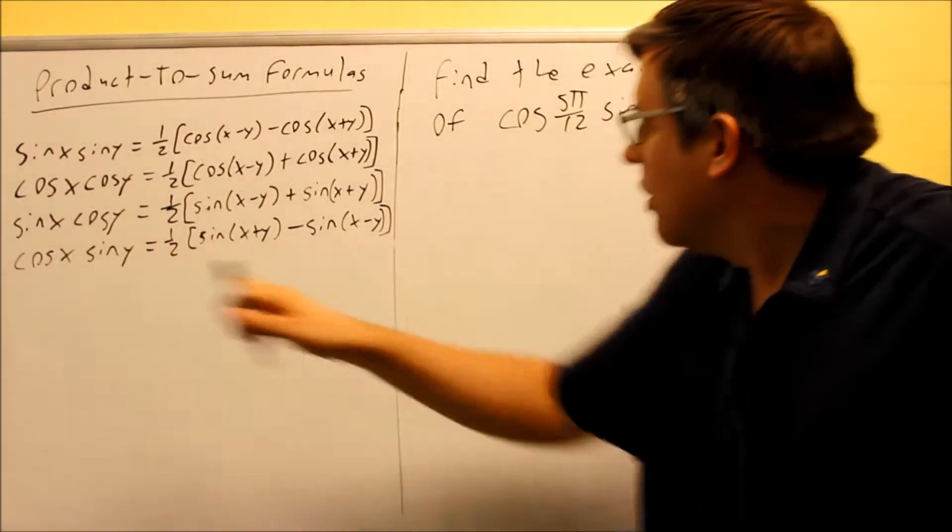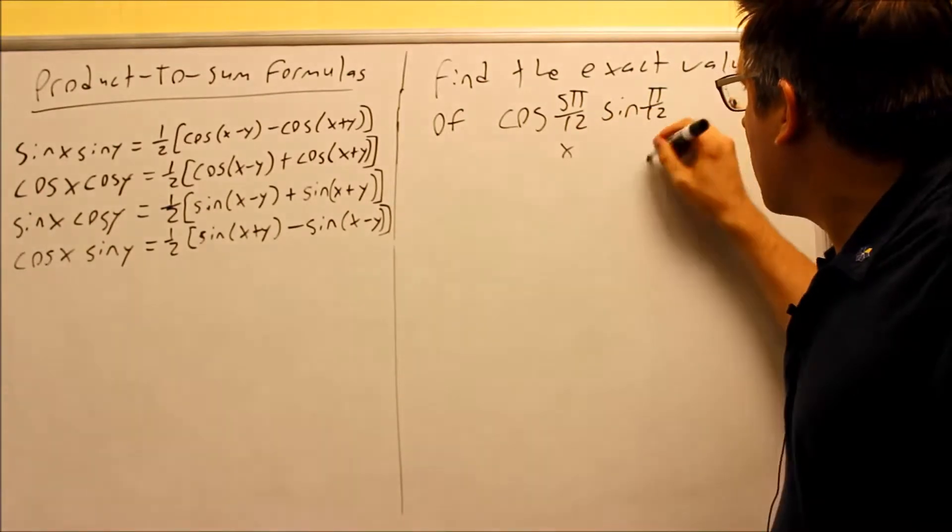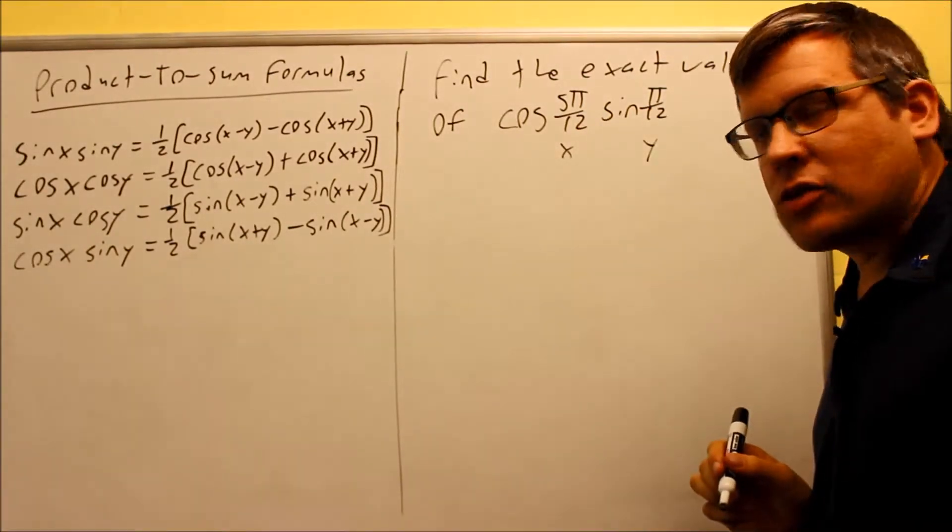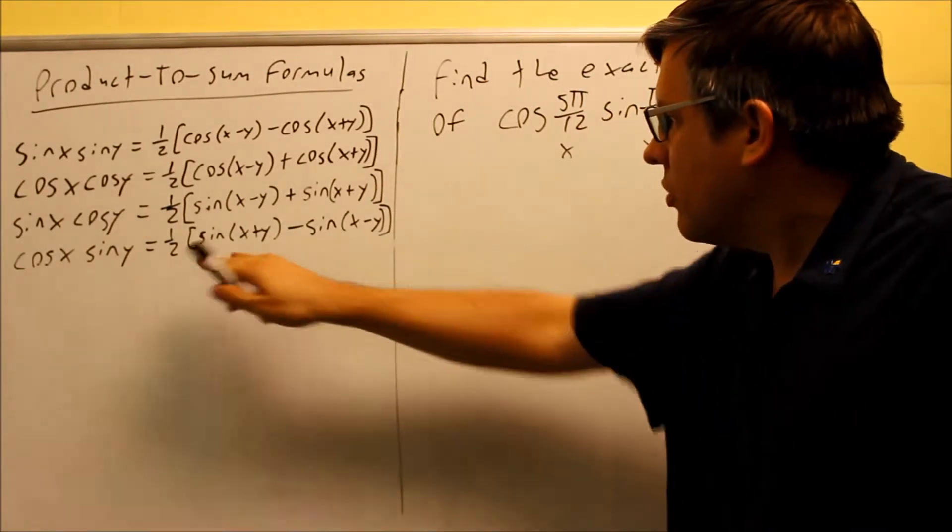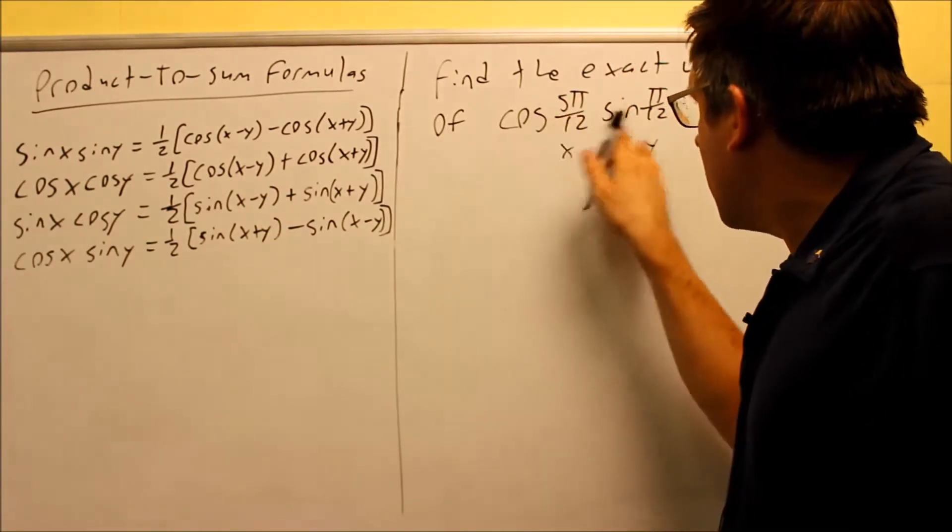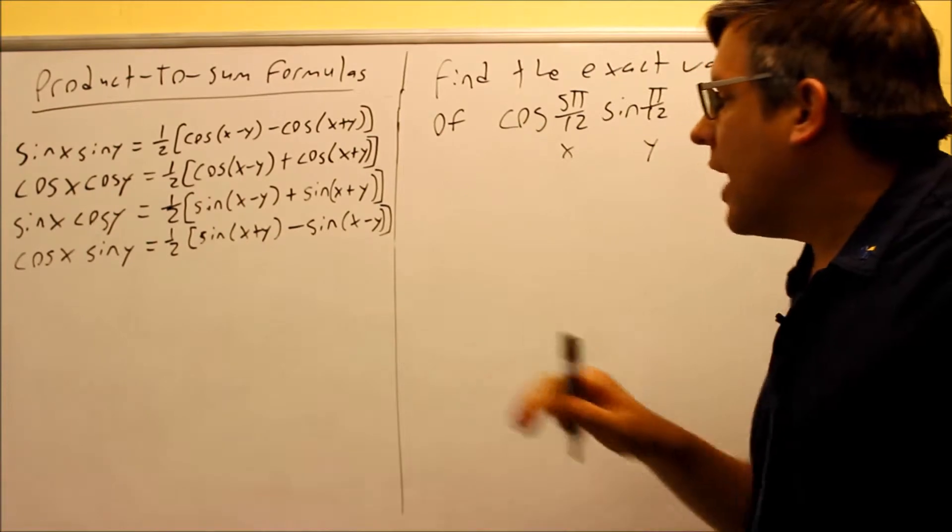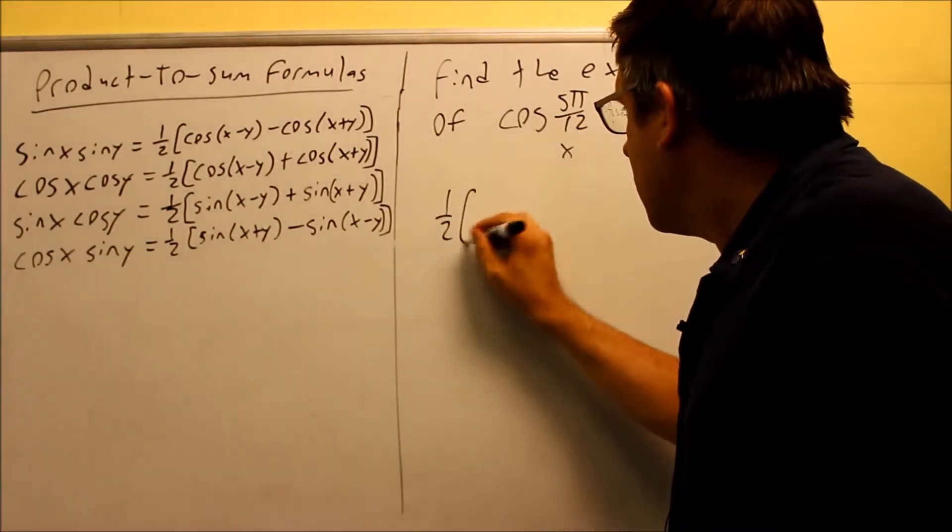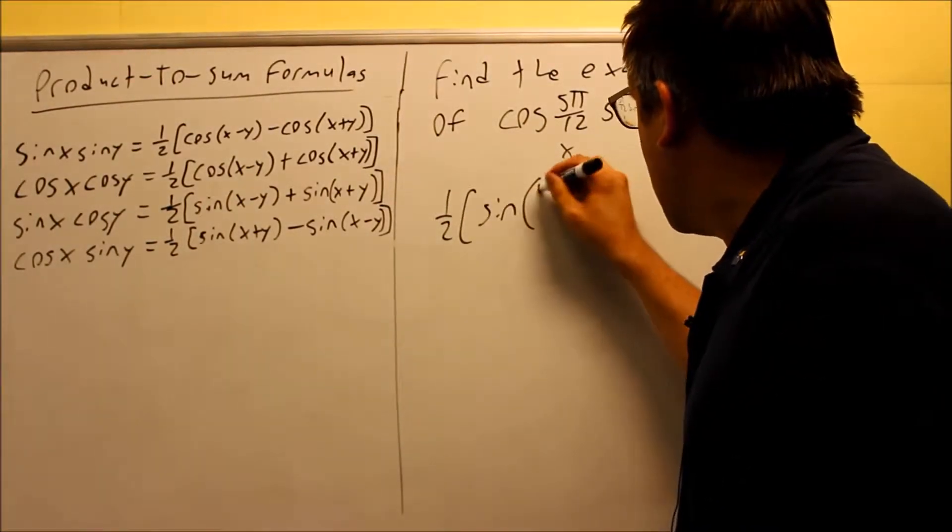So for cosine sine, the x would be 5π/12 and the y is π/12. We're going to put these into the bottom formula, and that means we can take this product and rewrite it as that.